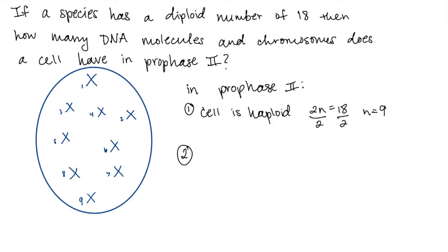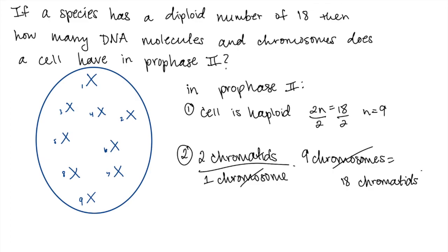You can find the number of DNA molecules by remembering that there are 2 chromatids per chromosome because the homologous pairs have just separated in meiosis I, but the sister chromatids are still intact. And because we just found that there are 9 chromosomes, we can go ahead and set up this dimensional analysis again and multiply 9 chromosomes by 2 chromatids. And the units of chromosomes will cancel and you'll be left with 18 chromatids, which is the correct answer.